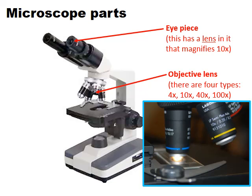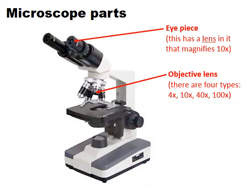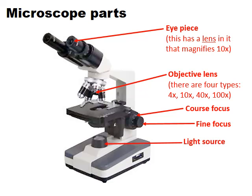A forty times objective gives a total of four hundred times magnification. In order to move the stage up and down to get our sample into focus, we use the adjusters at the back of the microscope. The larger of the two is called the coarse focus, which moves the stage in quite large increments to get the image into approximate focus. The smaller fine focus adjuster is used to get a sharp, precise image.